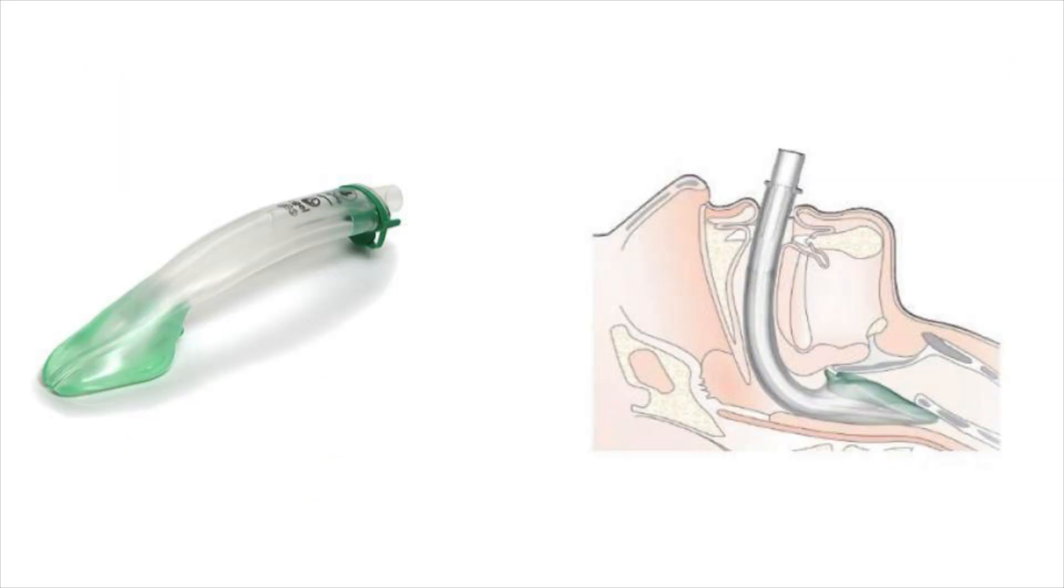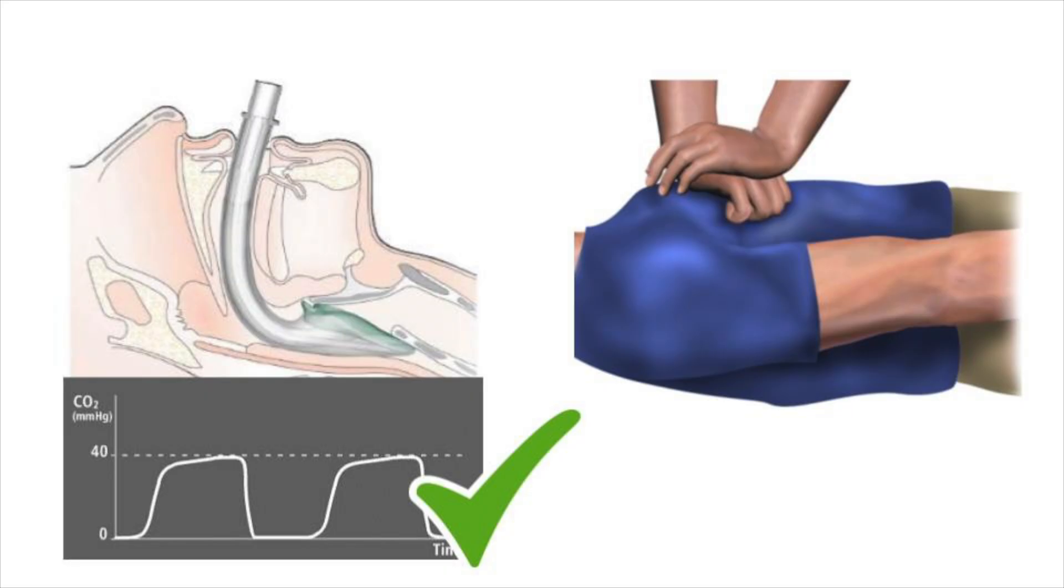Finally, in many systems, we have switched to using supraglottic devices as our primary airway while we are running those codes, while we're running that cardiac arrest resuscitation. End-tidal CO2 can be really valuable here as well to know not only that your supraglottic device was placed properly, but that it continues to sit in the right place because sometimes they can shift during CPR.